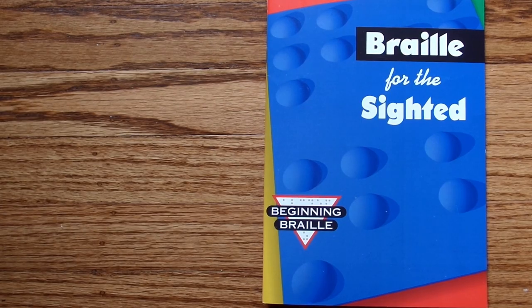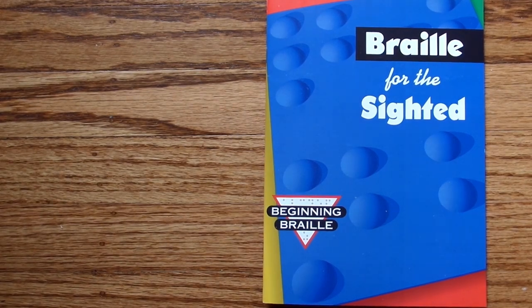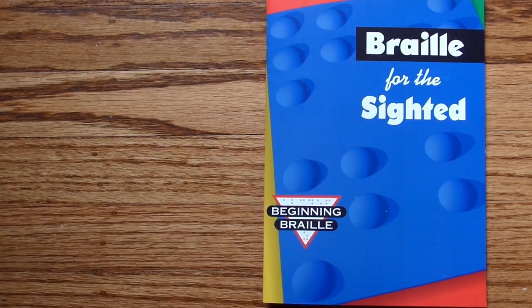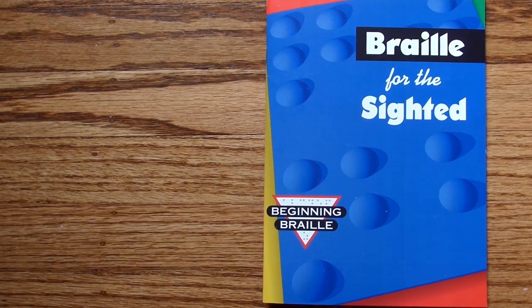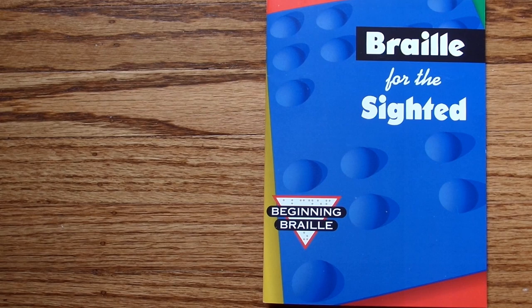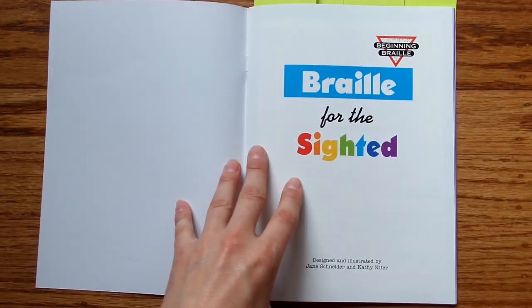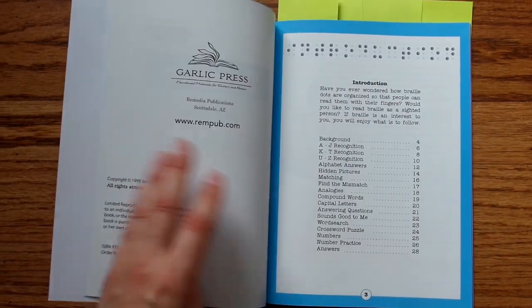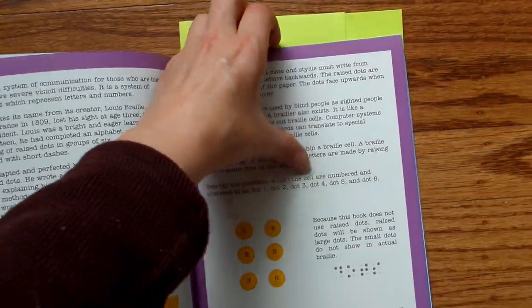So when I first got into braille, I discovered this book at the library, and I've since bought a copy, and it's called Braille for the Sighted, and it is so much fun. There's crossword puzzles, there's word searches, and it is exactly what the title says. The braille in here is flat, it's printed, it's not raised. So this is an introductory book for people who don't know anything about braille. I just want to show you a couple things. It goes over the alphabet, and what's really cool is that there's practice of decoding.